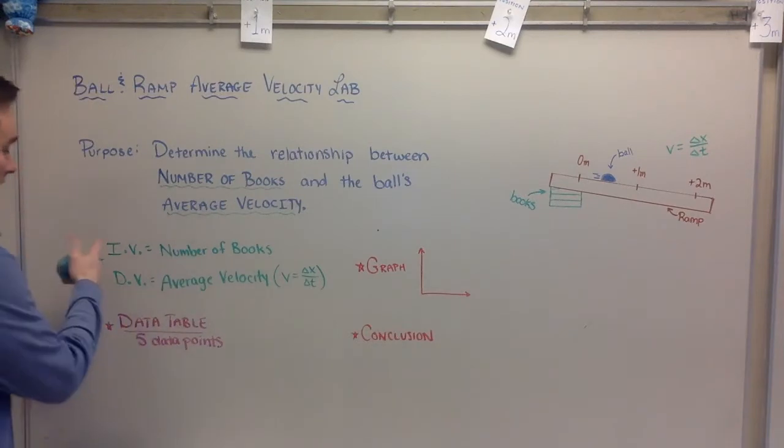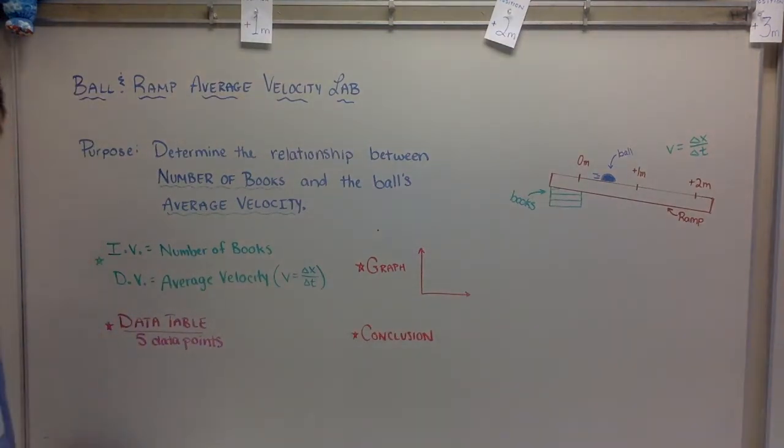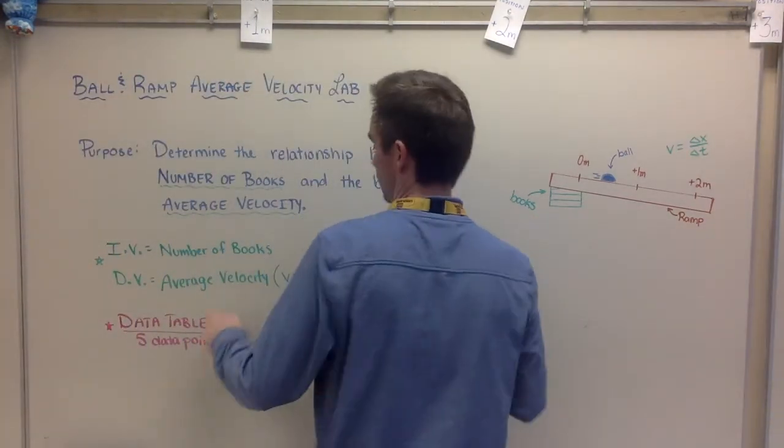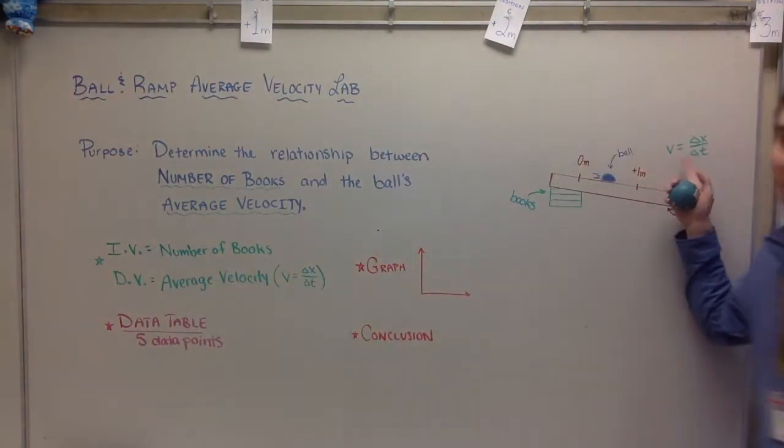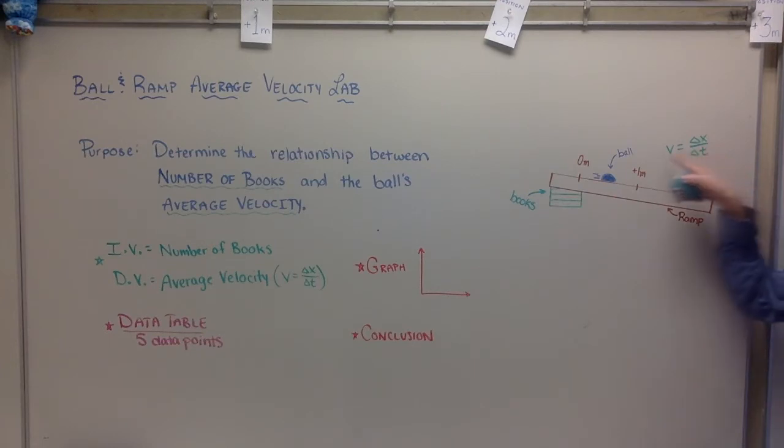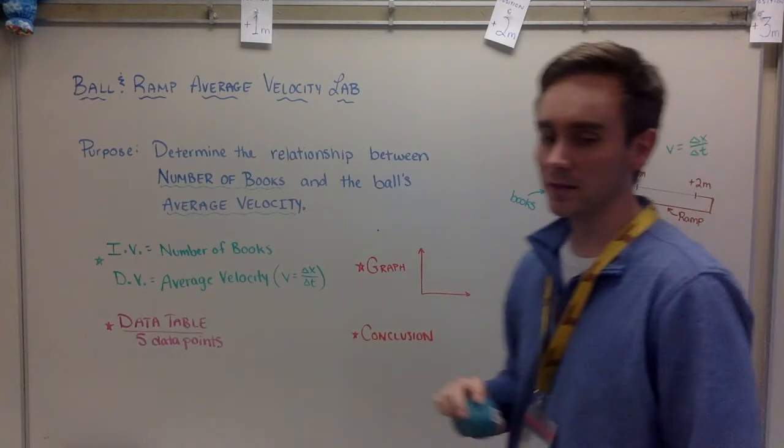So your independent variable is the number of books—you're going to choose the number of books you're going to put underneath it. You're going to see the dependent, being the resulting average velocity that you're going to have to calculate. So you're actually collecting position and time so that you can calculate average velocity.